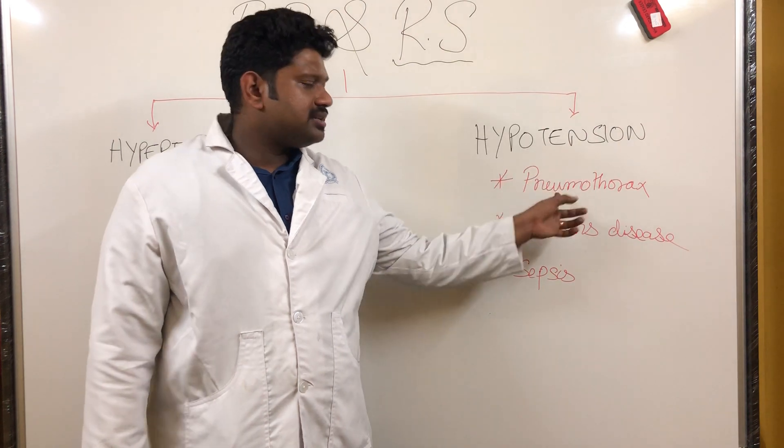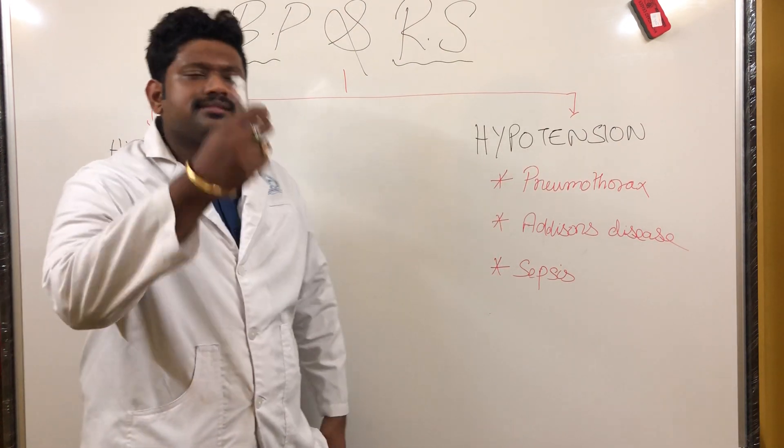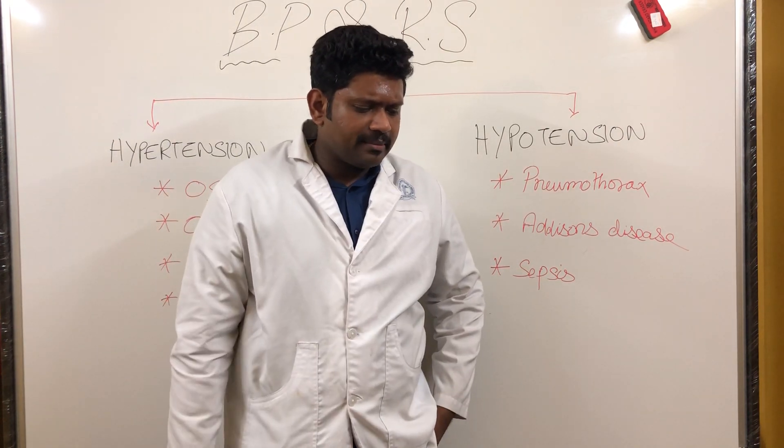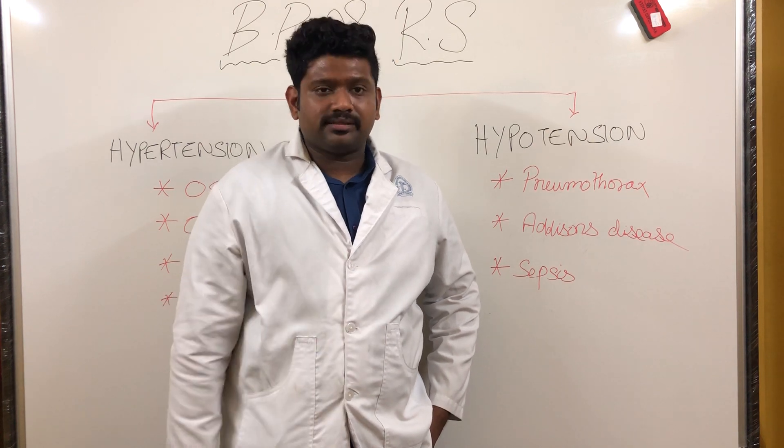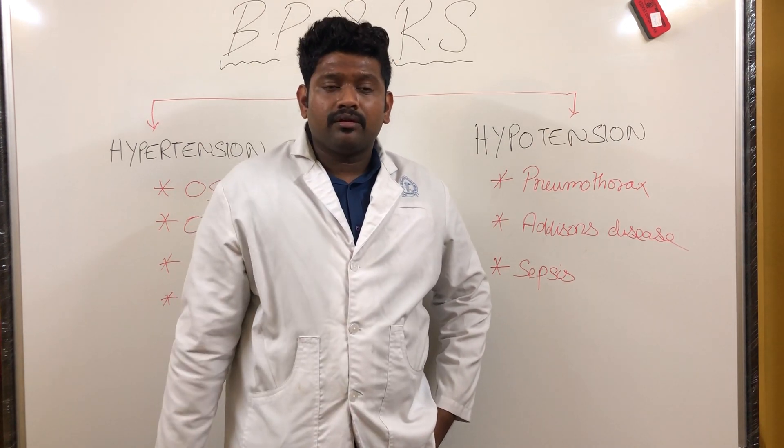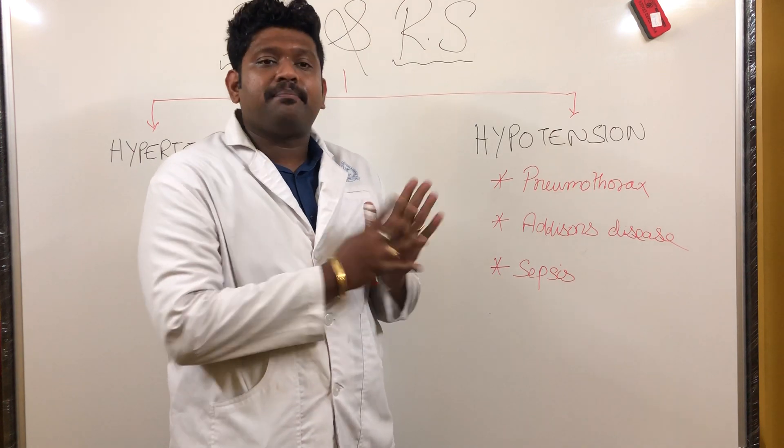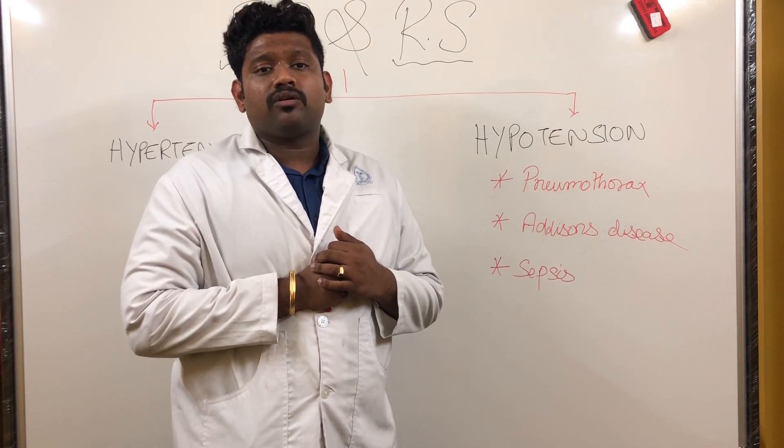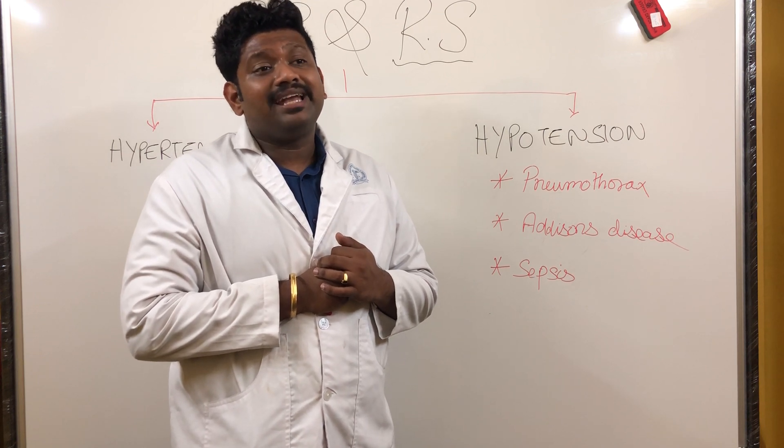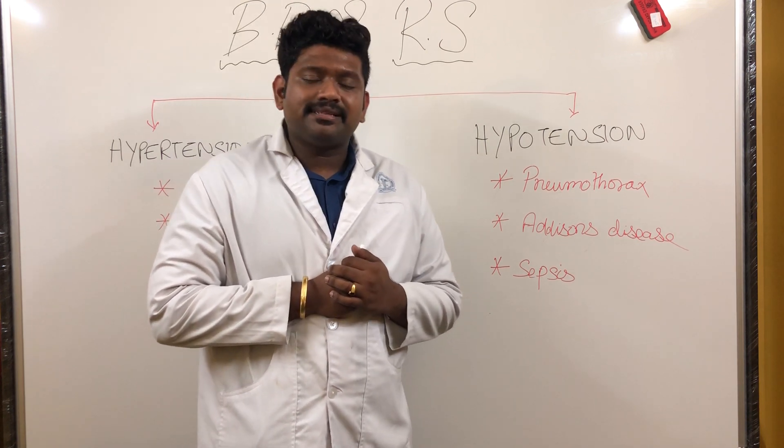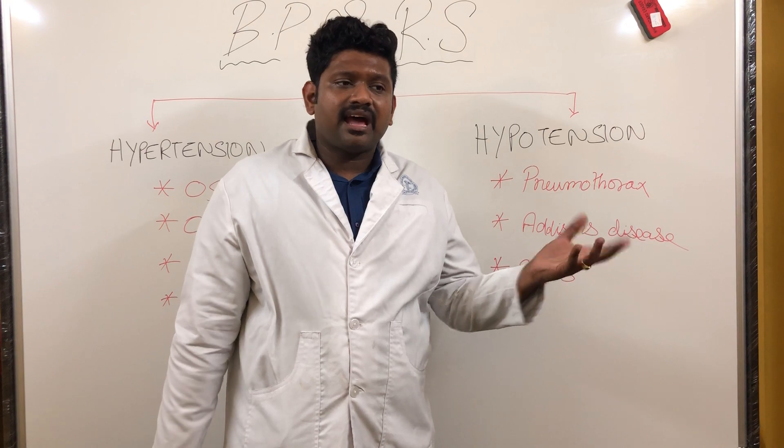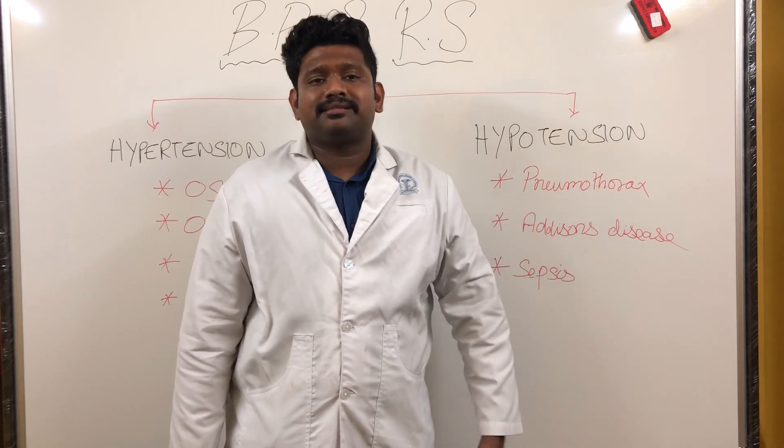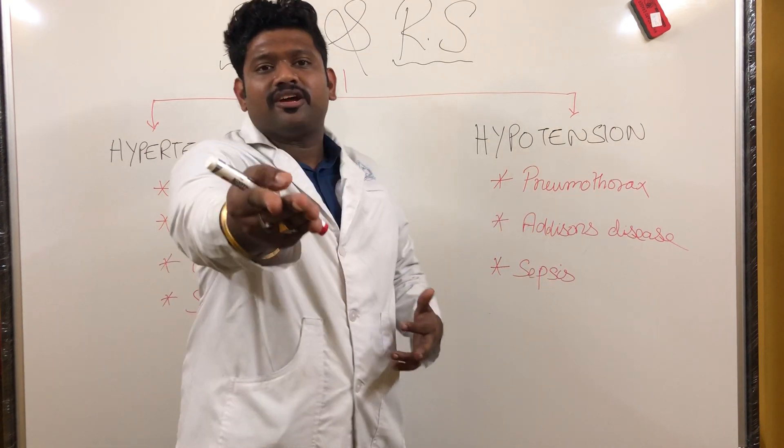Another scenario: if a patient is a known case of tuberculosis, coming with sudden low BP, and you see their hands are full of hyperpigmentation, you should think of Addison's disease. What is Addison's disease? It's hypo-functioning of the adrenal glands. Adrenal glands give us steroids.